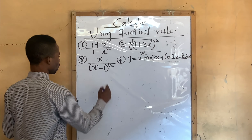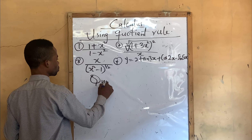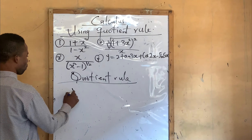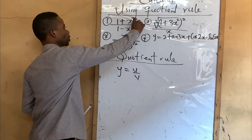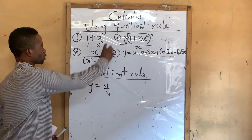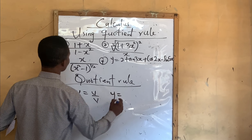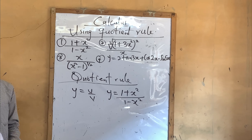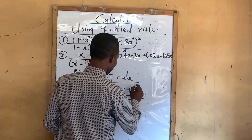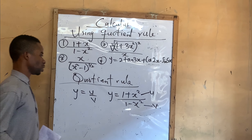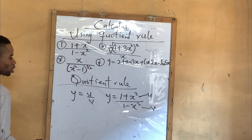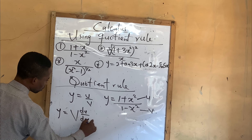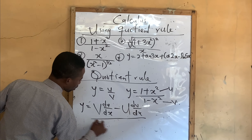Now, from number 1 — if you are writing quotient rule, quotient rule is actually talking about divisions. Like when you have y equals to u over v. When you have something in division like this, you use quotient rule. The formula for quotient rule is: dy/dx equals v·(du/dx) minus u·(dv/dx), all over v squared.